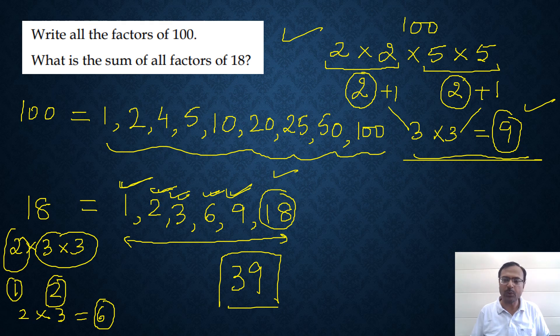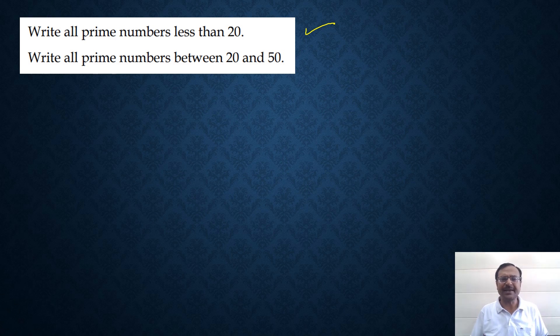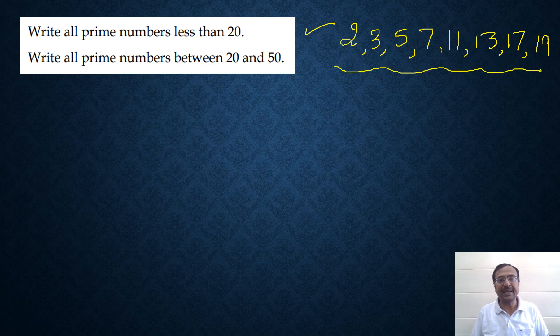Let's have a look at some more questions. Write all prime numbers less than 20. That's pretty easy, right? Only mistake students do is they write 1 also as a prime number. Remember, 1 is neither prime nor composite. So we start with 2, 3, 5, then 7, and after 7, 8, 9, 10 are not prime. So 11, 13, 14, 15, 16 are not prime, 17, and finally 19. So these are 8 prime numbers less than 20.